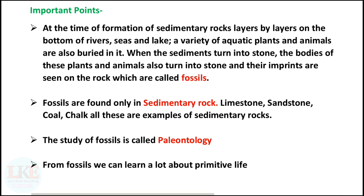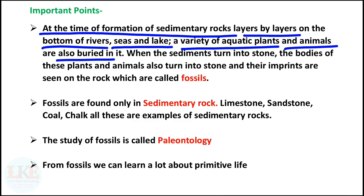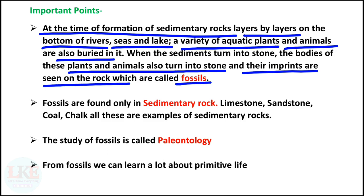Now I will tell you how they turn into stone. At the time of formation of sedimentary rocks, layer by layer on the bottom of rivers, seas and lakes, a variety of aquatic plants and animals are also buried in it. When the sediments turn into stone, the bodies of these plants and animals also turn into stone and their imprints are seen on the rock — these are called fossils. Fossils are found only in sedimentary rock. This is very important as it often comes in exams: in which rock are fossils found? The right answer is sedimentary rock.